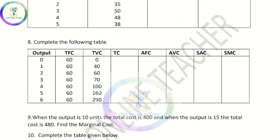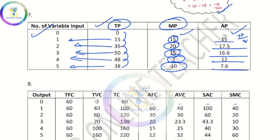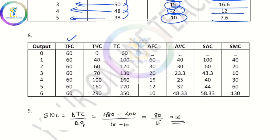If you want to add a table, TFC and TVC are TFC, AVC, SAC, SMC. 60 plus 0 is 60, 60 plus 40 is 100, 60 plus 60 is 120. AFC equation is TFC divided by quantity. So 60 by 1, 60 by 2, 60 by 3.